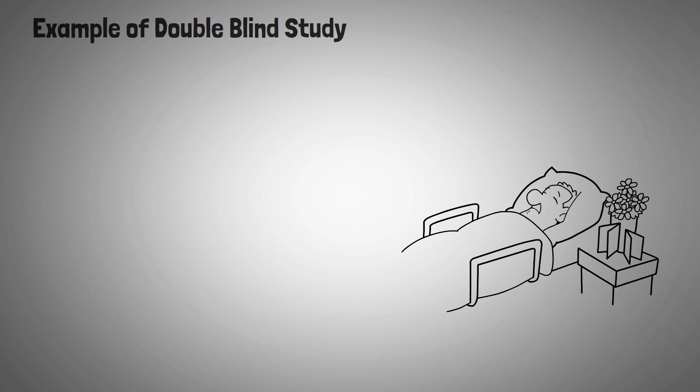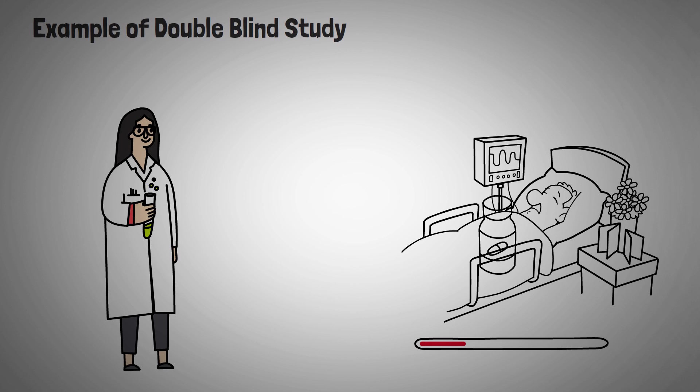Next, let's go over an example of a double blind study. Identifying successful treatments is a complex procedure. Let's say that you're a physician and you prescribe a new medication to a patient. After taking the medication, the patient reports improvement in their condition. But this doesn't actually mean that the treatment is effective. In fact, in many cases, patients will see improvements even when they're not taking active medication.